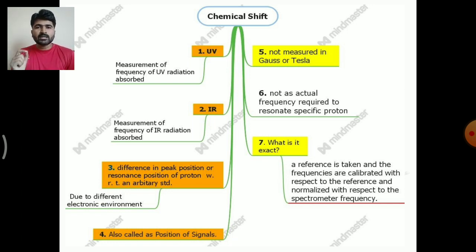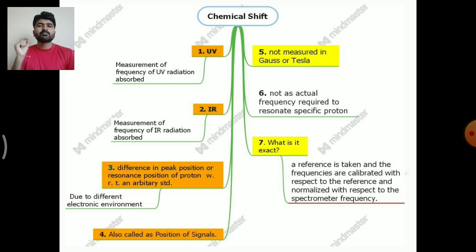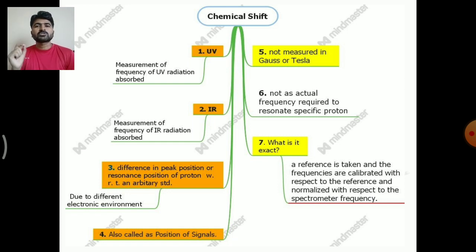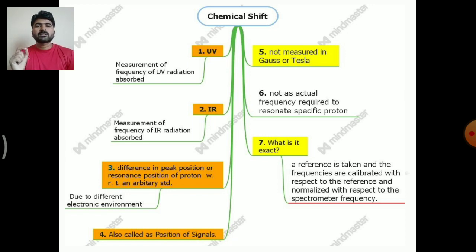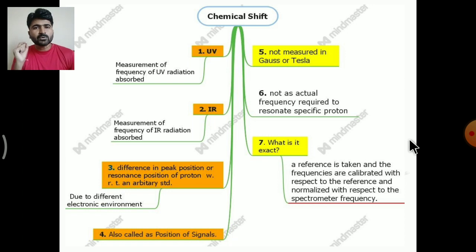In NMR spectroscopy there is use of radio waves as well as magnetic field strength, and at a specific magnetic field strength and specific frequency of the radio waves there is resonance of the protons present in the molecule. But there is no direct measurement of the frequency of these radio waves required to resonate the specific type of proton.